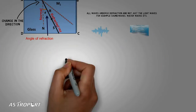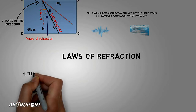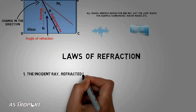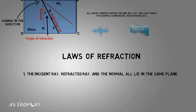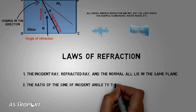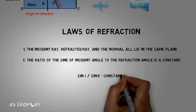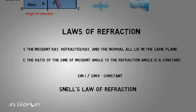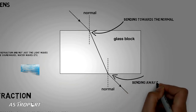Now let us talk about the laws of refraction, which are important to know. The first law says the incident ray, refracted ray, and the normal to the interface between the two media at the point of incidence all lie on the same plane. The second law says the ratio of the sine of the angle of incidence to the sine of the angle of refraction is a constant — this law is also called Snell's Law of Refraction. Notice that as light enters a medium with a higher index of refraction it bends towards the normal, and as it enters a medium with a lower index of refraction it bends away from the normal.